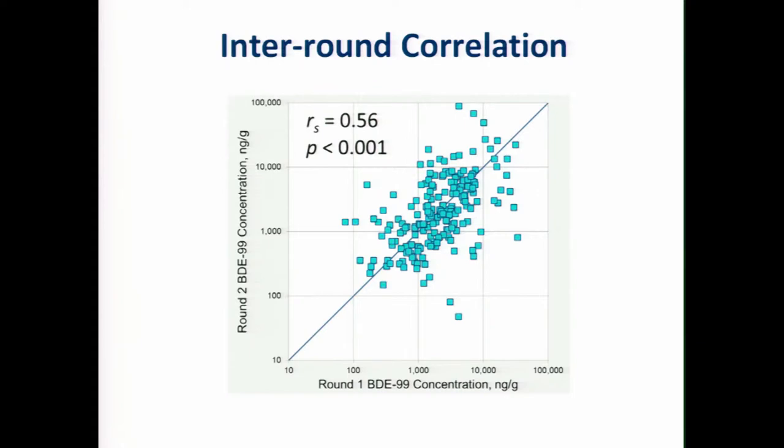It's a pretty long time gap and it represents a time that's equivalent to the time between birth and the average dust collection period. What we saw was that although there is quite a bit of variability from sampling round to sampling round, overall there is a correlation between the two sampling rounds. So we're somewhat reassured by this. It does seem to suggest that we could use dust measurements that were taken after diagnosis to try to assess exposures that are relevant to disease onset.